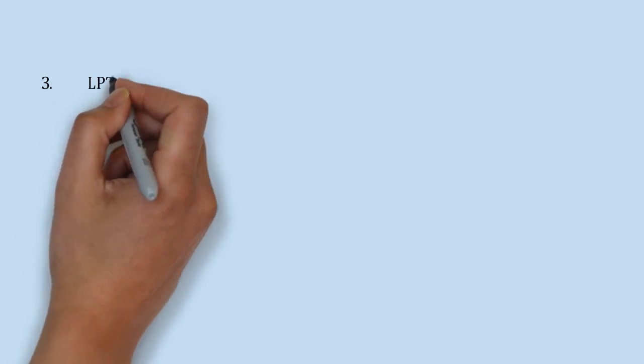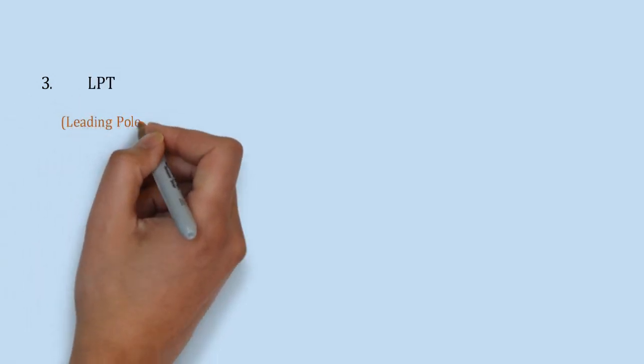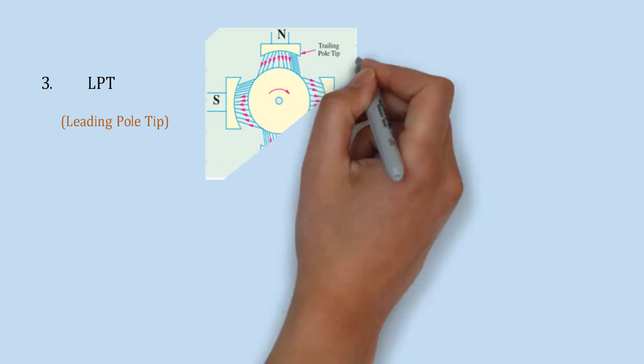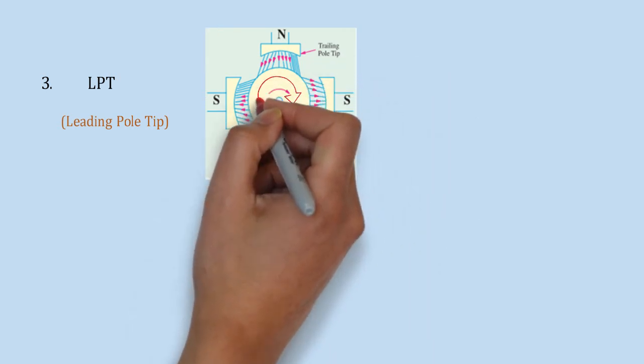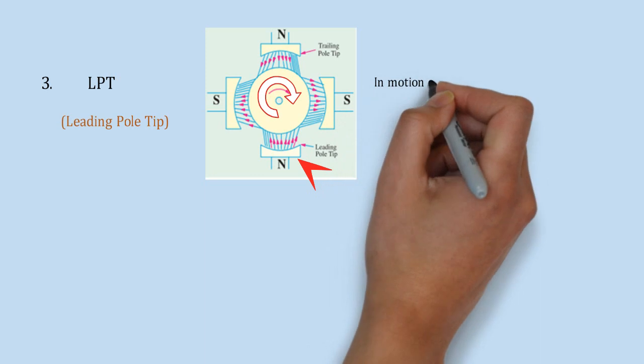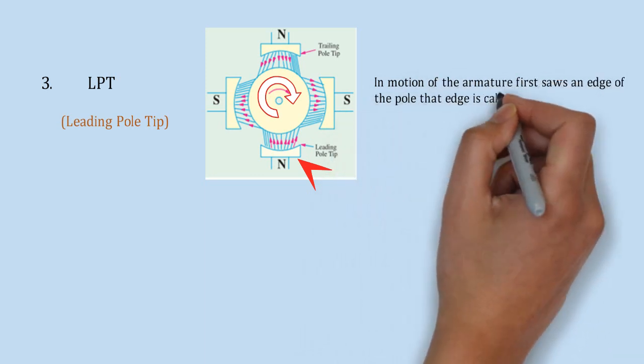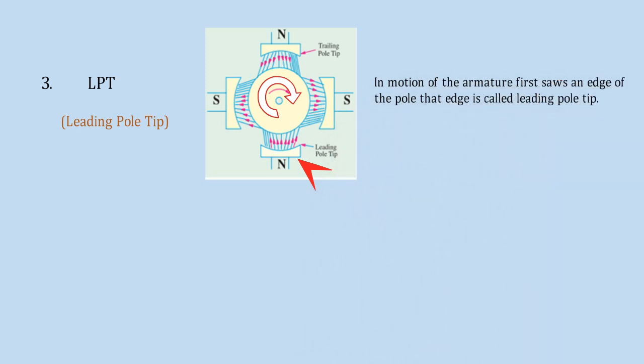Third is leading pole tip. Here, armature conductors are rotating in clockwise direction, and LPT may be defined as the pole tip which is first met during the rotation by armature conductor.